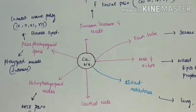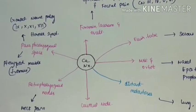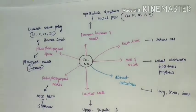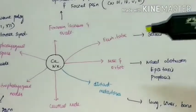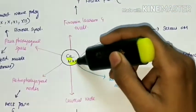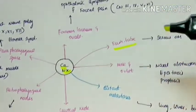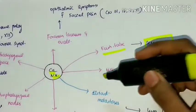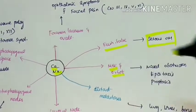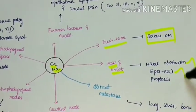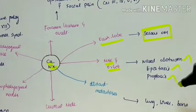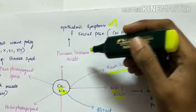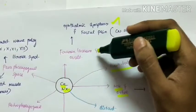This flow chart shows the spread of nasopharyngeal carcinoma, mostly the local spread. The carcinoma can spread through the eustachian tube causing serous otitis media in the ear. It can spread to the nose and orbit producing nasal obstruction, epistaxis, and proptosis. It can spread through the foramen lacerum and foramen ovale.